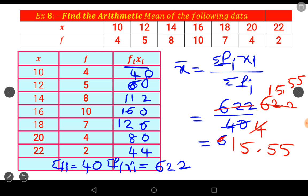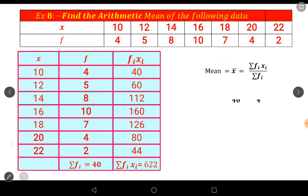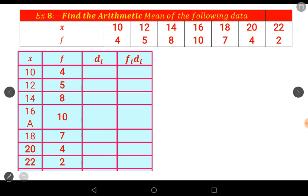This is one method to find the mean by the direct method. The solution is x̄ equals 622 by 40 equals 15.55. The mean value equals 15.55, which is nearby 16. Here there are seven classes in this question, all in ascending order. The middle class is 16, so let the assumed mean be 16.